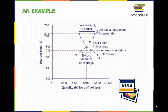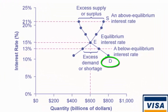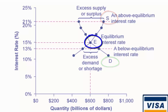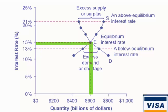In this market for credit card borrowing, the demand curve D for borrowing financial capital intersects the supply curve S for lending financial capital at equilibrium E. At the equilibrium, the interest rate — the price in this market — is 15%, and the quantity of financial capital being loaned and borrowed is $600 billion. The equilibrium price is where the quantity demanded and the quantity supplied are equal.